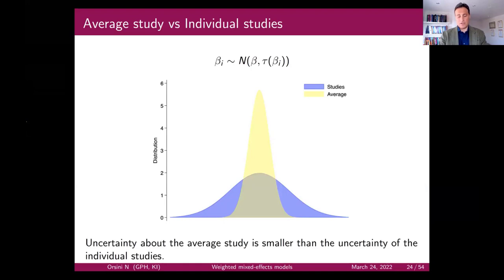In a random effects meta-analysis, one thing is the distribution of estimates in a population of studies — which is different from the uncertainty related to the effect for the average study.